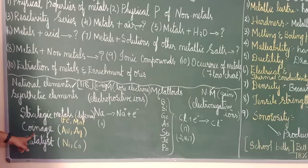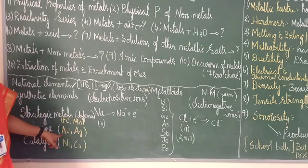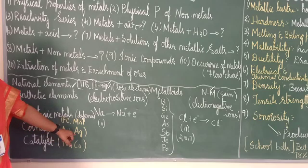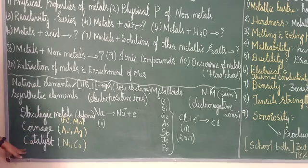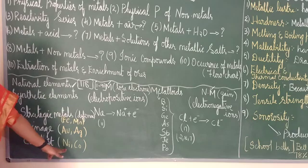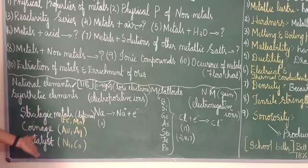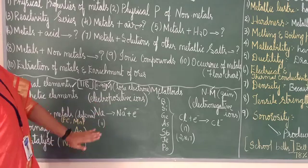The next type is coinage metals — metals which are used in making coins. For example, Au (gold) and Ag (silver). Then there are catalyst metals — metals that can act as a catalyst. For example, nickel, cobalt, palladium, and platinum are all catalyst metals.